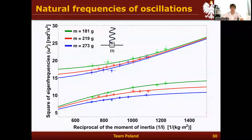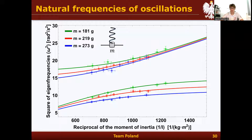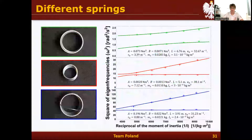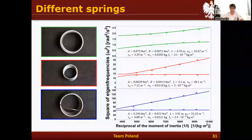In the first experiment, we examined how the square of eigenfrequencies depends on the reciprocal of the moment of inertia for three different masses of the pendulum. As you can see, when we increase the mass or moment of inertia, the eigenfrequencies decrease. In the second experiment, we compared eigenfrequencies to the reciprocal of moment of inertia for three different springs with different spring constants, and for all of them our theory matched the experiments.